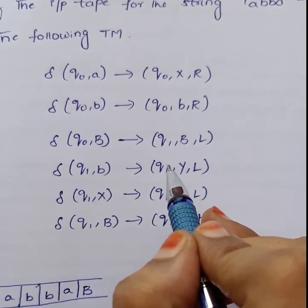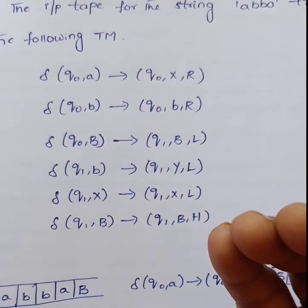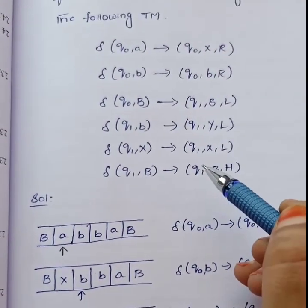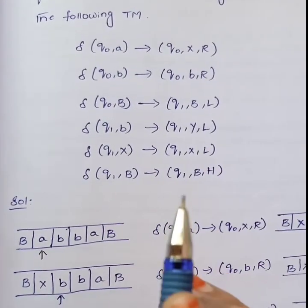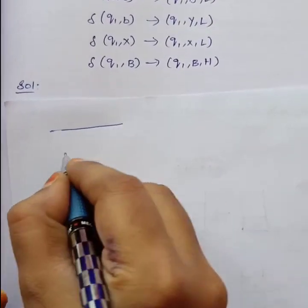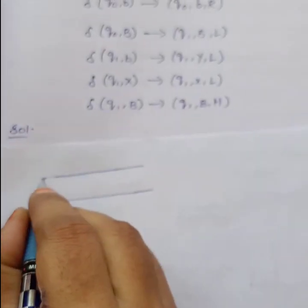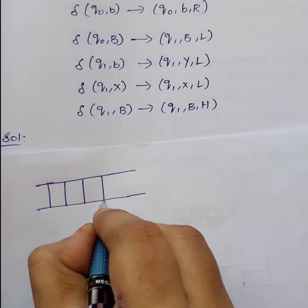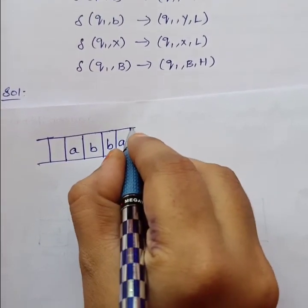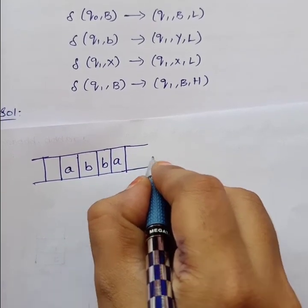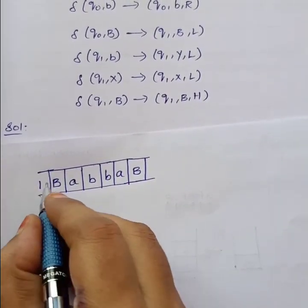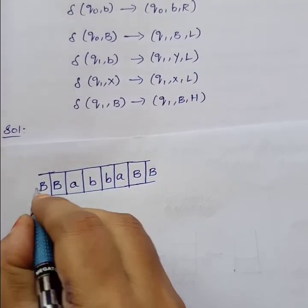See how I am going to move the read/write head and the content of the input tape for the string A, B, B, A. When we start the solution, you have to write the tape first. This is the input tape — partition it into cells. Place the given string A, B, B, A. This tape is infinite, so for the remaining cells place blank symbols (B). Any number of blanks can be placed as needed.